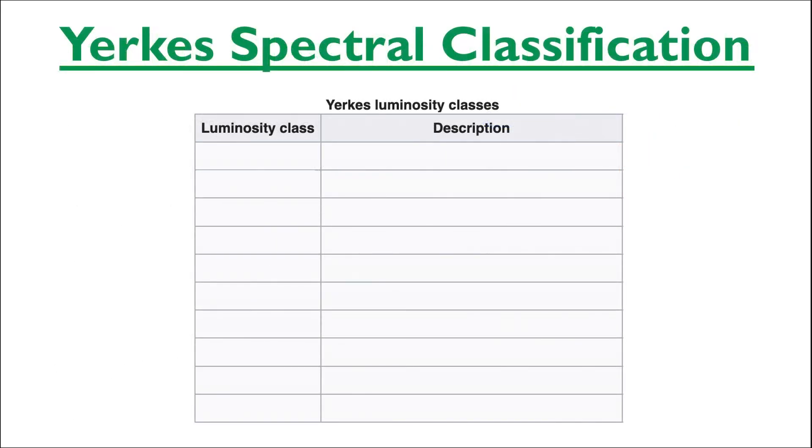We briefly mentioned the Yerkes spectral classification in the previous video when we began labeling the different parts of the HR diagram and their luminosity classes. Let's briefly review that. The brightest luminosity class is 0 or 1a+, and this applies to the hypergiants or the extremely luminous supergiants.